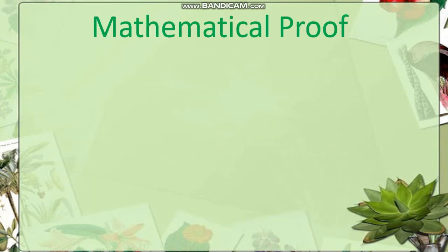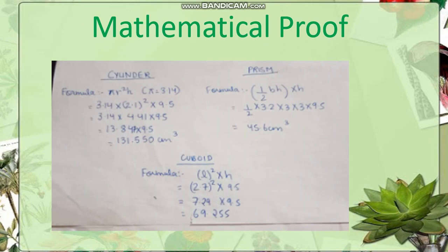We also have a mathematical proof of the same. We know that the cylinder volume formula is π r² h, with π being taken as 3.14. By putting the values, we will get the answer as 131.550 cm³. Similarly, we would put the formula for volume of a prism and we will get the answer as 45.6 cm³. For the cuboid, by putting the formula of volume, we will get the answer as 69.255 cm³. Thus, we can see that mathematically also, the volume of the cylinder is more than the prism and cuboid.